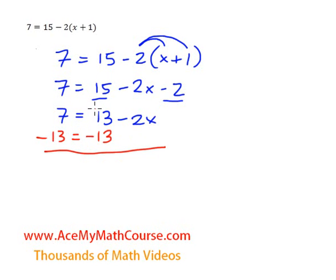13 minus 13 is 0. So we can just bring the negative 2x down. And 7 minus 13 is negative 6. Then what?